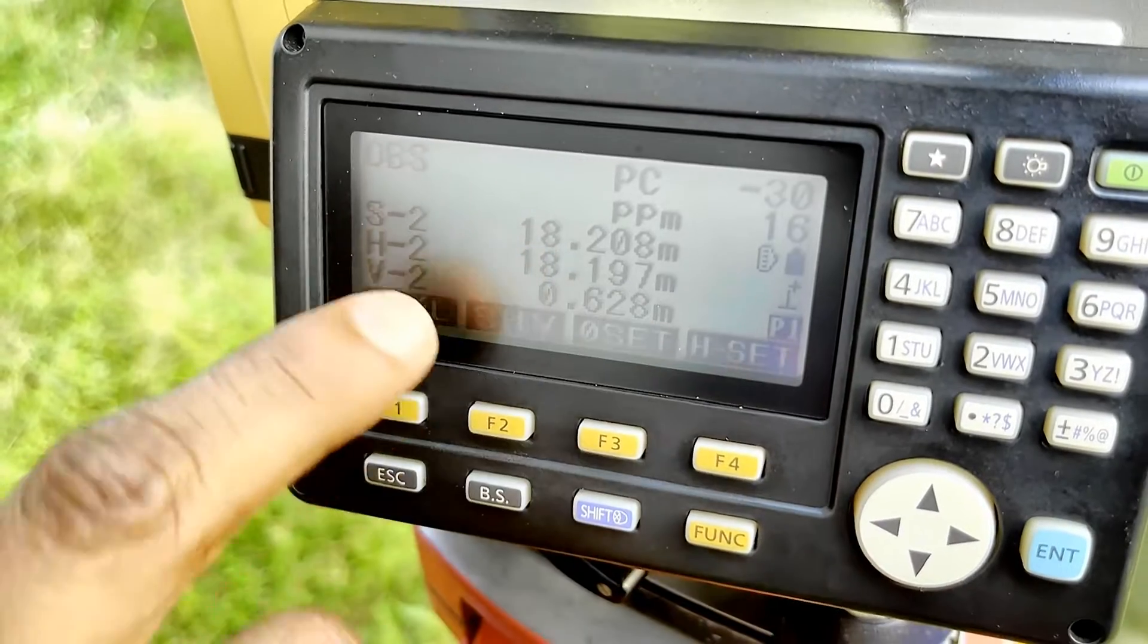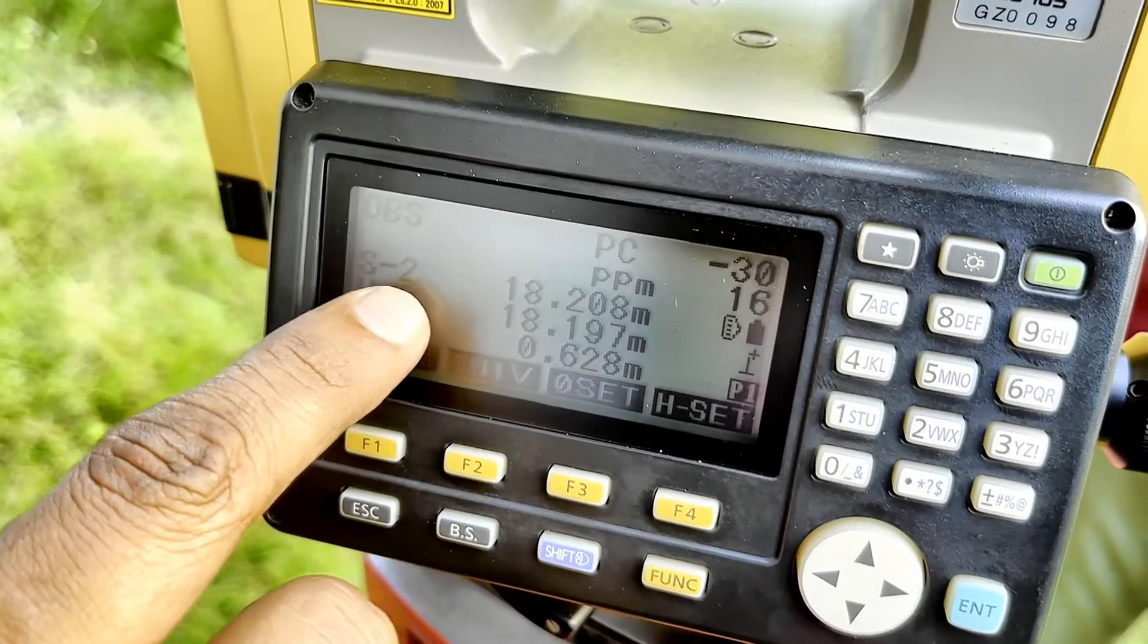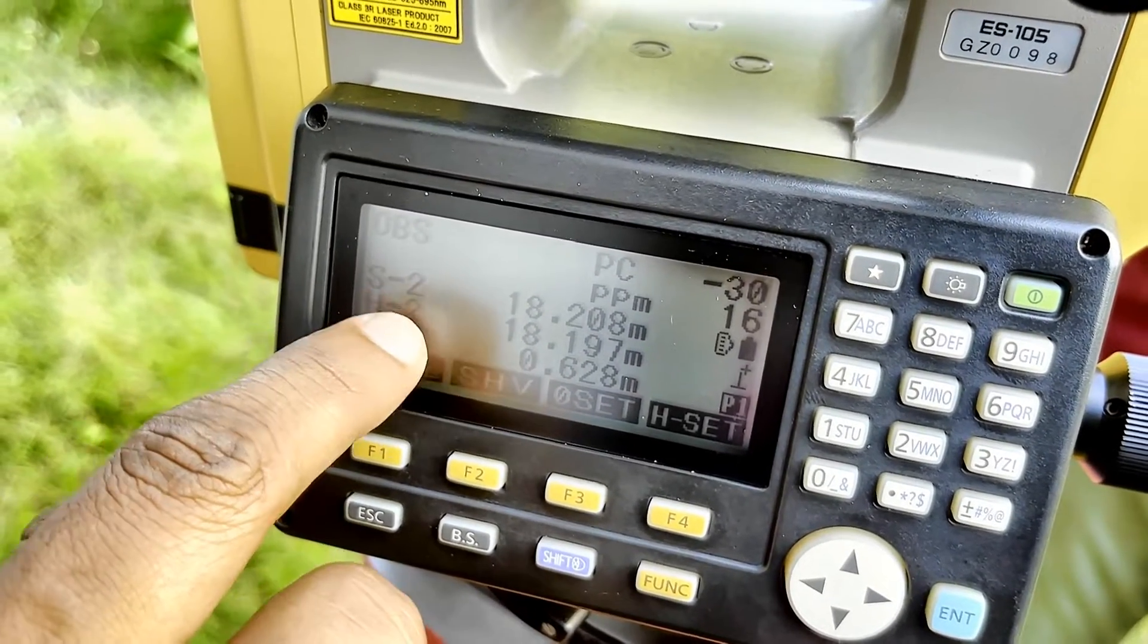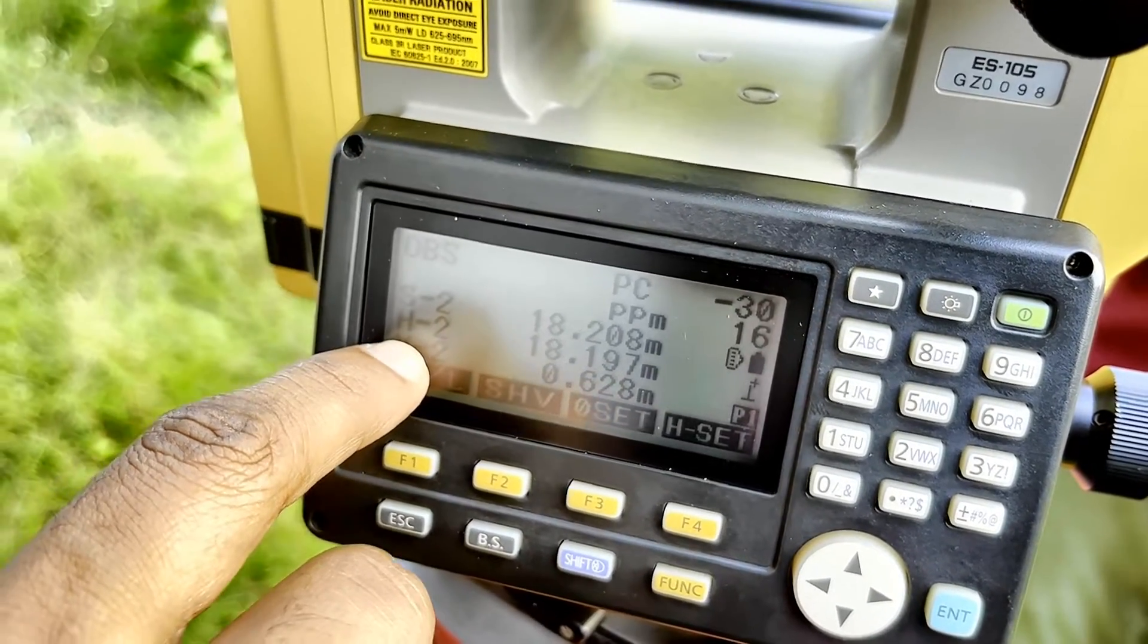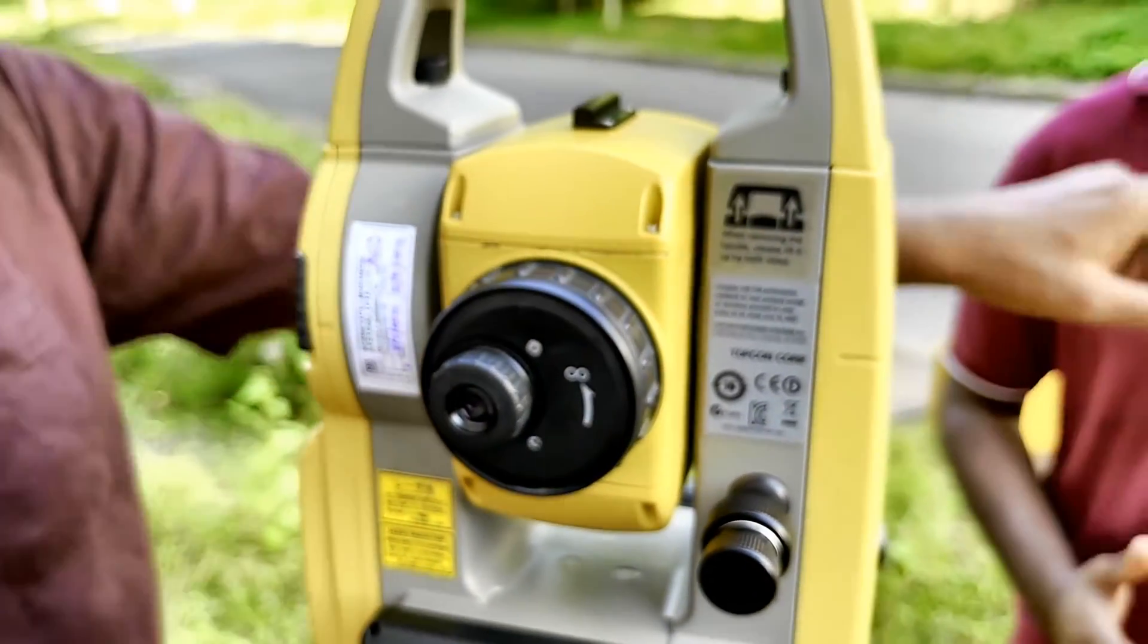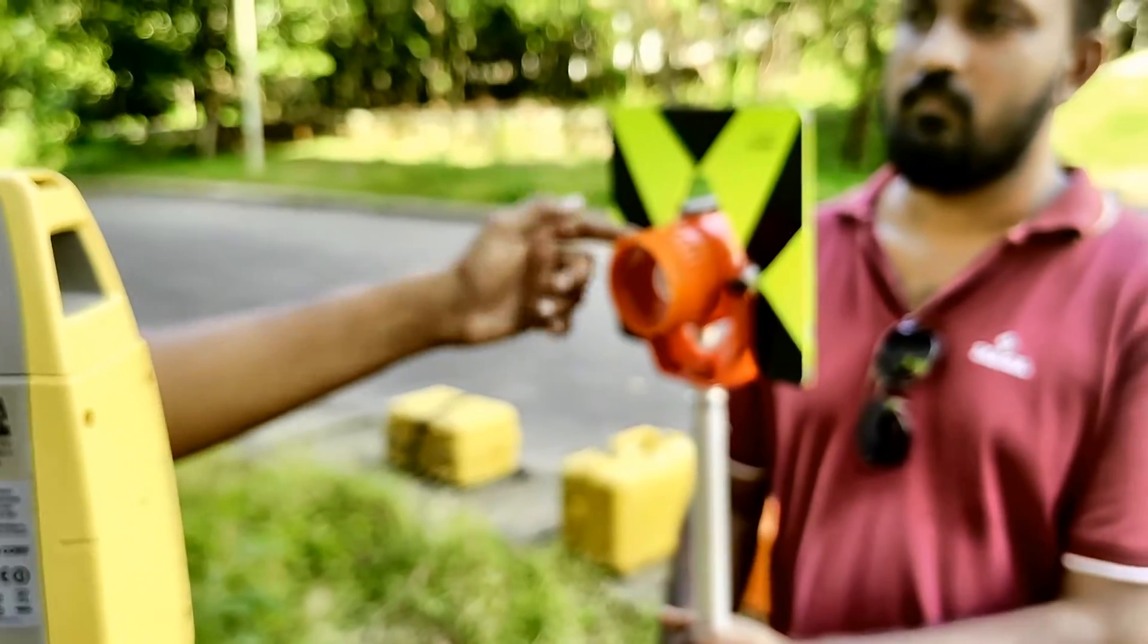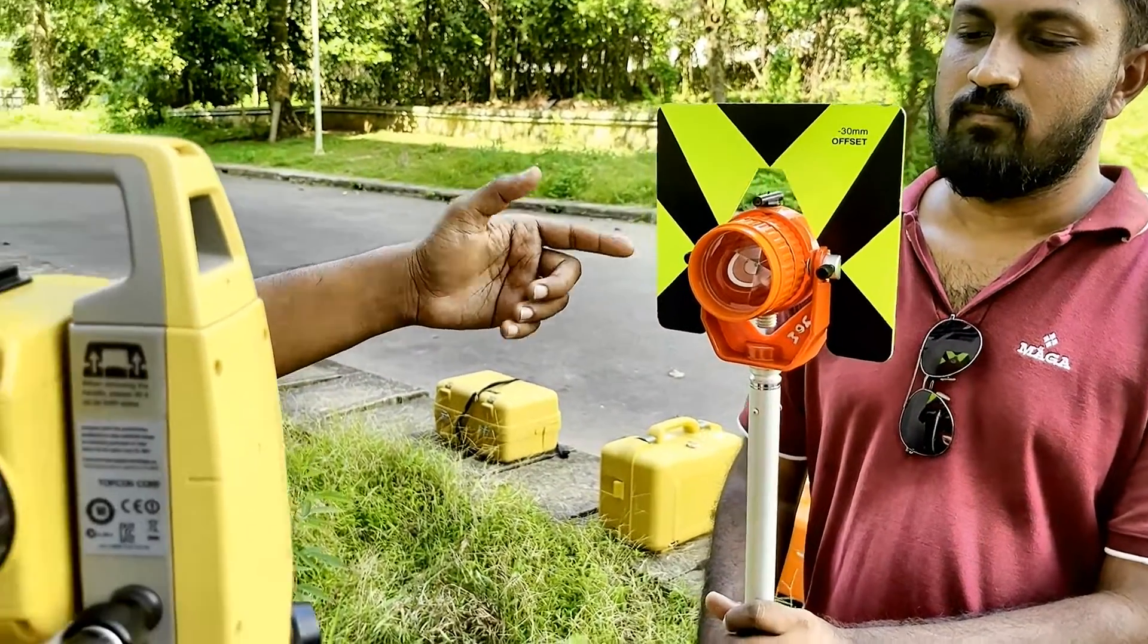S means the slope distance, H is the horizontal distance between instrument and the reflector, and V is the vertical difference between the Trunnion axis and the horizontal axis of this target. That is the vertical difference, V.